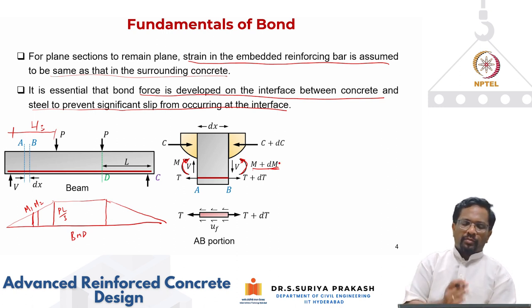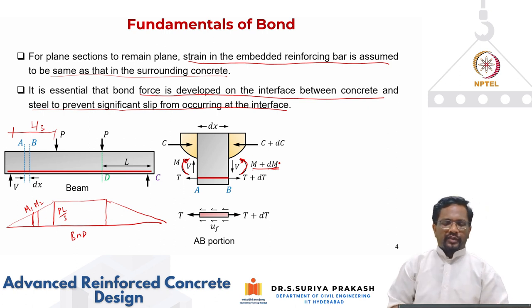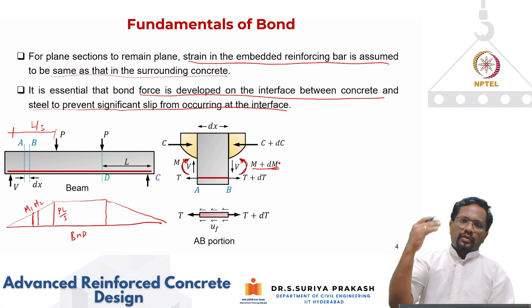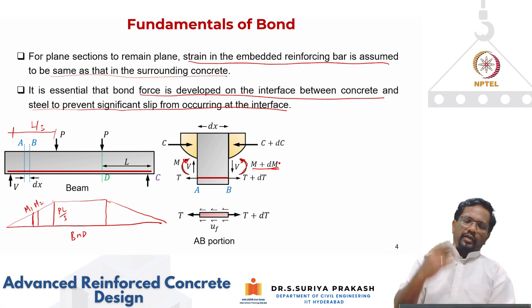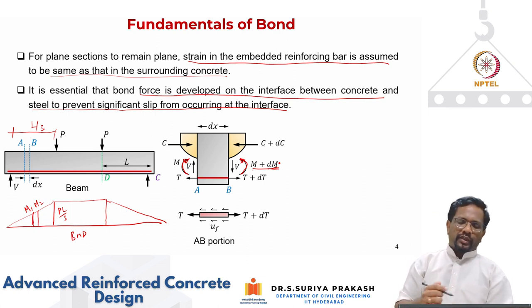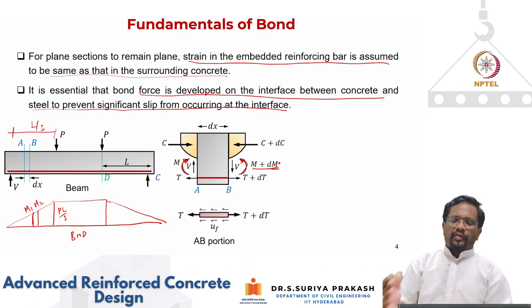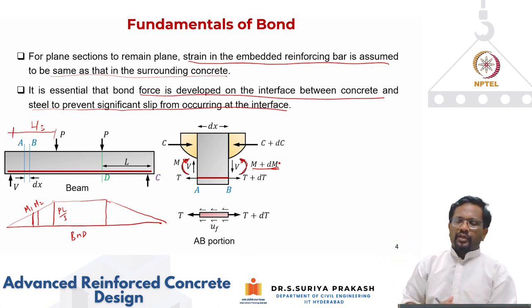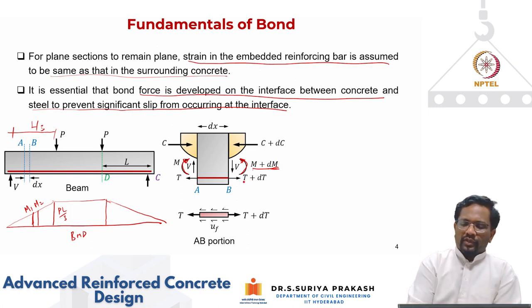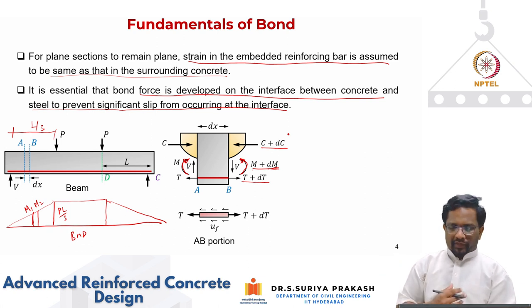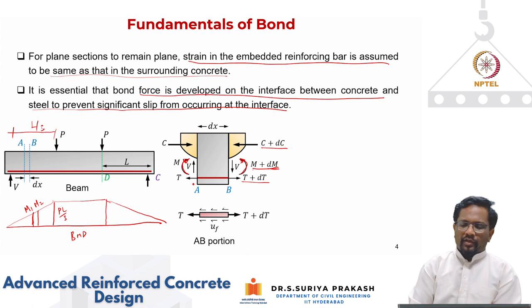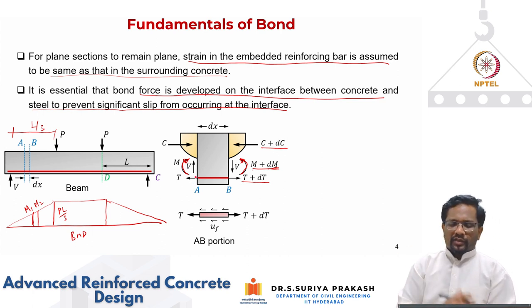For the moment on the left side at section A, we develop a compression force in concrete and tension force in steel. C equals T and the lever arm between them generates the moment resistance. At section B with moment M plus dM, the force in steel must increase to T plus dT and compression force increases to C plus dC because the moment has increased.